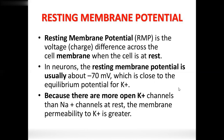The neuron has a negative charge inside the cell. This is maintained by three key elements: sodium, potassium, and chloride ions. Proteins inside the cell also contribute. The resting membrane potential is minus 70 millivolts.